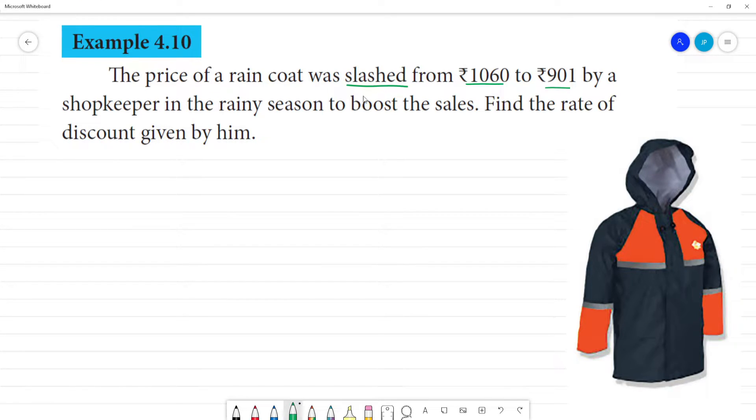The price of a raincoat was slashed from, so it is marked price. First mark the price. Marked price is equal to rupees 1060. Selling price is equal to rupees 901.